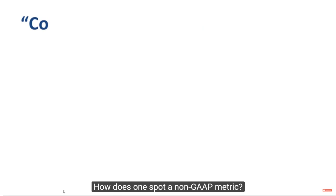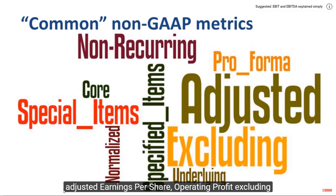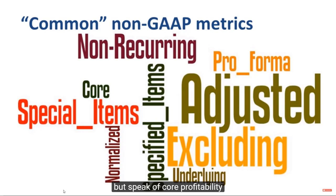How does one spot a non-GAAP metric? The words 'adjusted' and 'excluding' often give it away: adjusted gross profit, adjusted EBITDA, adjusted net earnings, adjusted earnings per share, operating profit excluding special items, net income excluding non-recurring items, and so on. By the way, some companies don't even call it non-GAAP, but instead speak of core profitability, normalized profitability, underlying profitability, or pro forma measures.